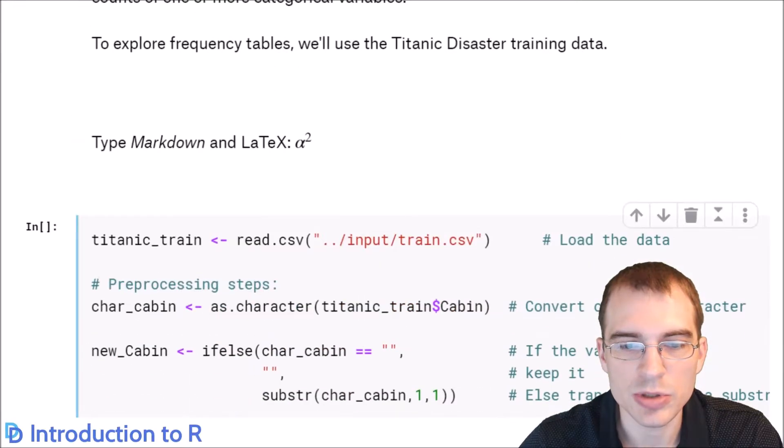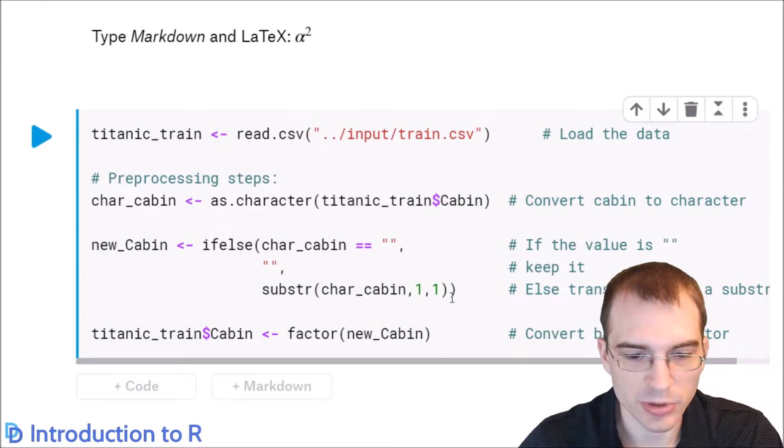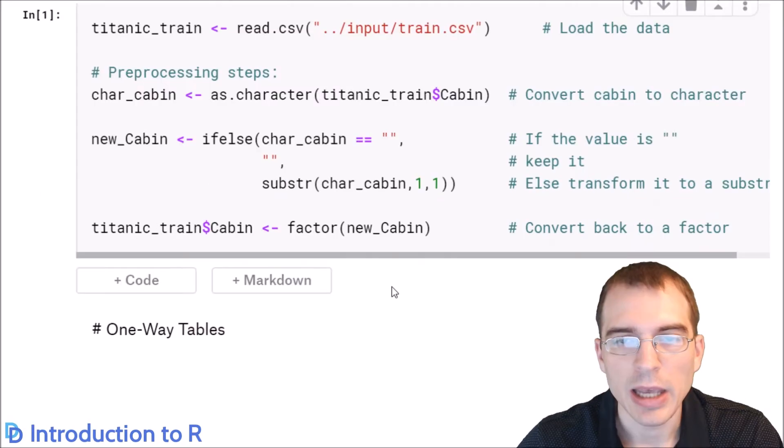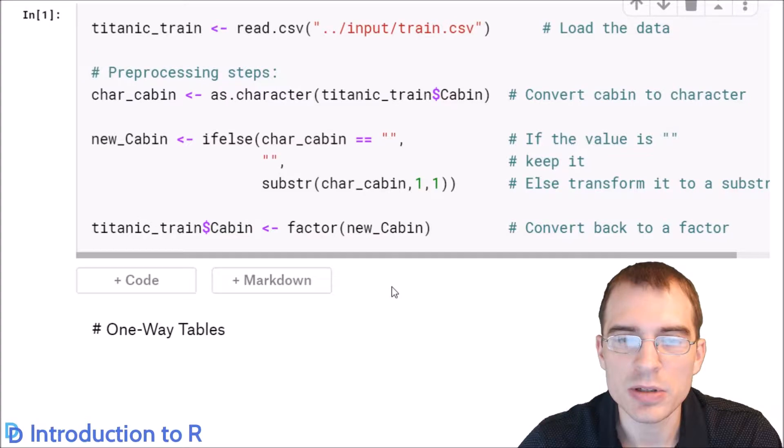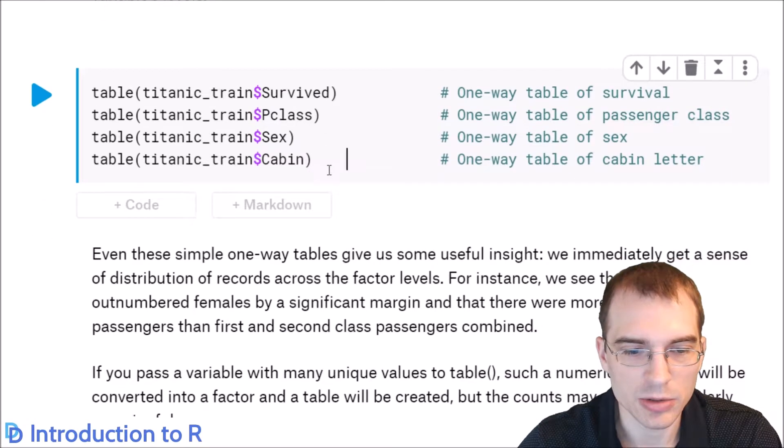To do this, we're going to be using the Titanic Disaster Training dataset that we explored in, I believe it was lesson 13. So I'm just going to load that data in, and we'll run some basic preprocessing on it here. You don't need to concern yourself too much with what that's doing. We're just loading some data. And we'll just start by making some one-way frequency tables of different categorical variables in this dataset.